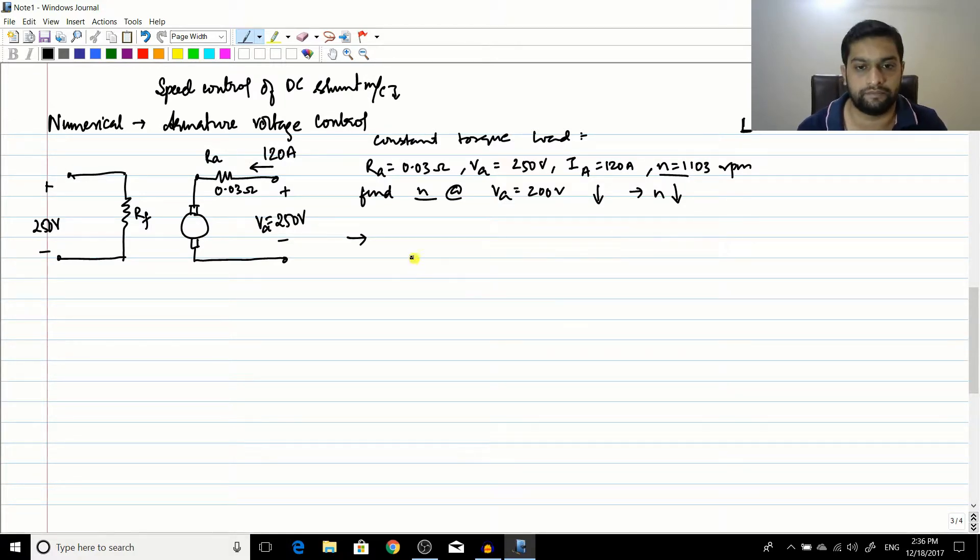Now let us write the equation: EA is equal to k*phi*omega. In this case, because you are not varying the value of RF, the flux is equal to constant. If IF is constant, flux is constant because you are not changing the value of IF, you are only changing the value of VA.